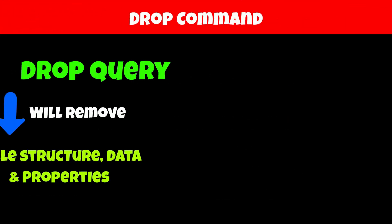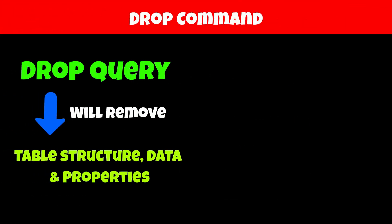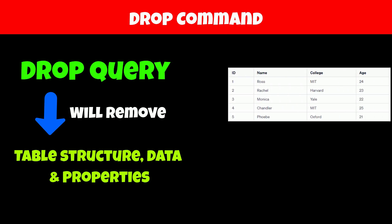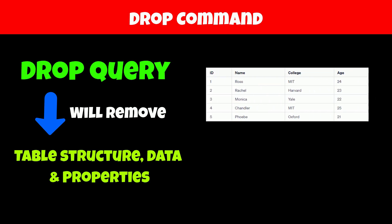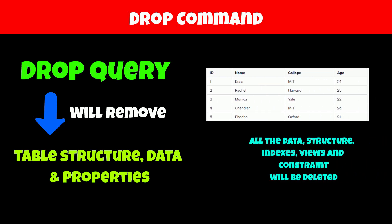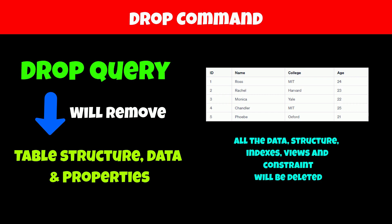On the other hand, the DROP command will delete the table structure along with its data and properties. For example, if you execute the DROP command on a student table, then its structure along with data and properties such as indexes, constraints, and views will be deleted.